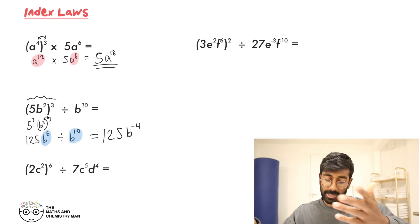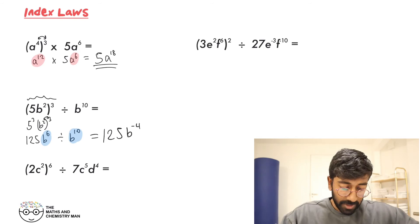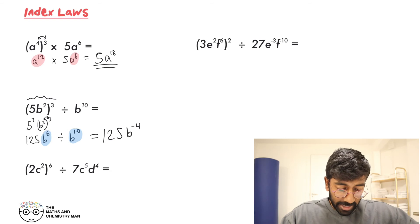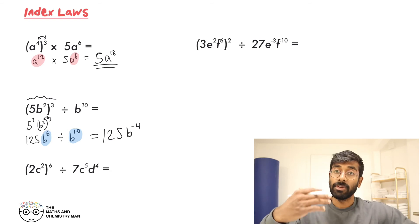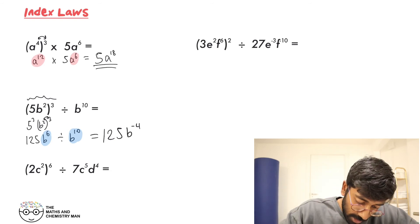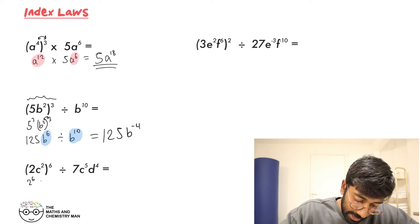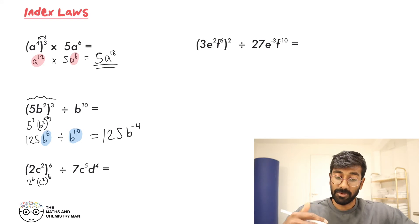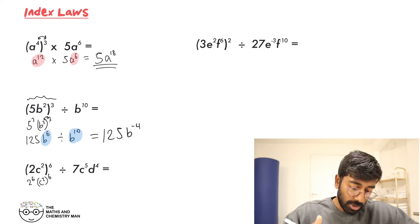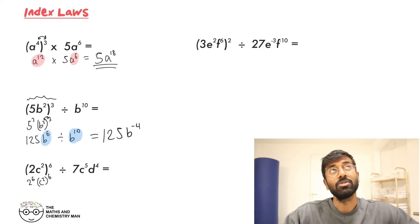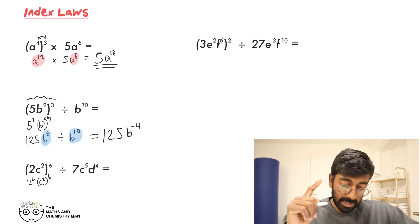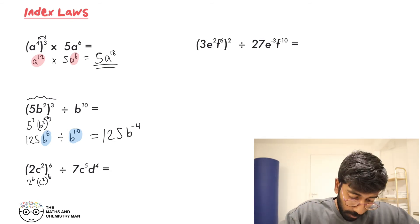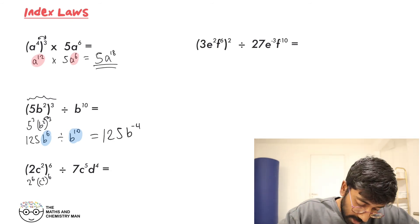Next one, very similar. We've got 2 to the power of 6, and C squared to the power of 6. 2 to the power of 5 is 32, so 2 to the 6 is 64. So we've got 64.